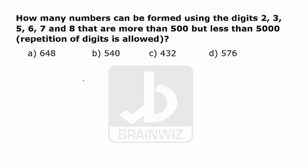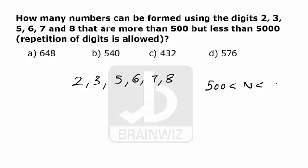Now the digits we have to use are 2, 3, 5, 6, 7, and 8, and the condition is the numbers are more than 500 and less than 5000. This means we have to find two cases: 3-digit numbers and 4-digit numbers. So let's divide the question into two cases.